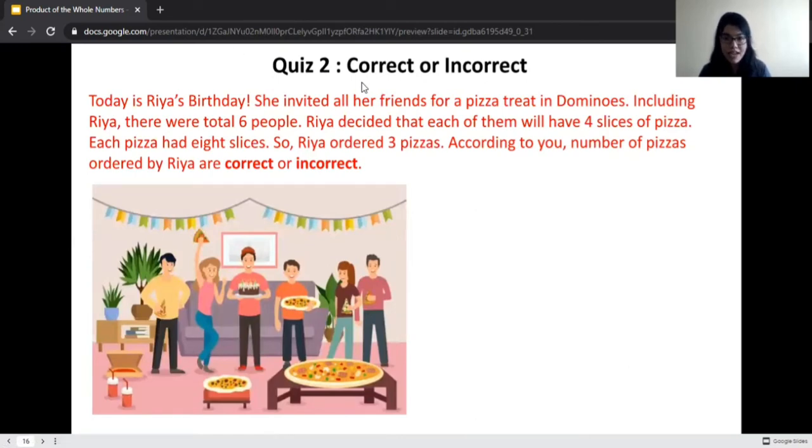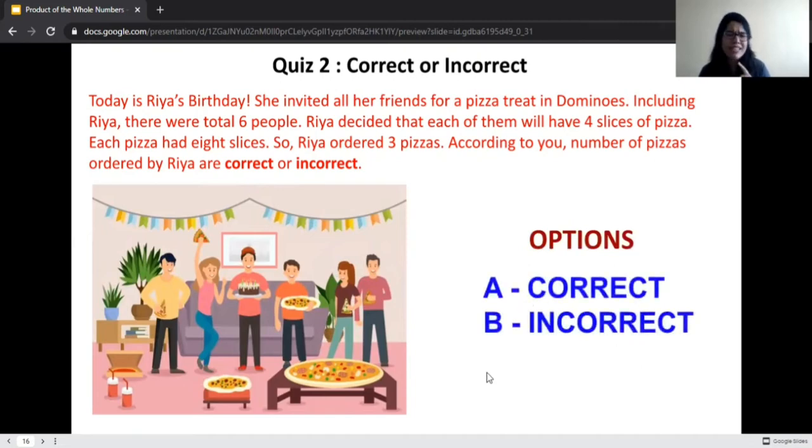The name of this quiz is Correct or Incorrect. Today is Ria's birthday. For her birthday, she has invited her friends for a treat in Domino's. Including Ria, there are six people. Ria has decided that she will give everyone four slices of pizza. Now each pizza has eight slices. Ria ordered three pizzas. According to you, the number of pizzas ordered by Ria are correct or incorrect. You have some options. First is correct and second is incorrect.